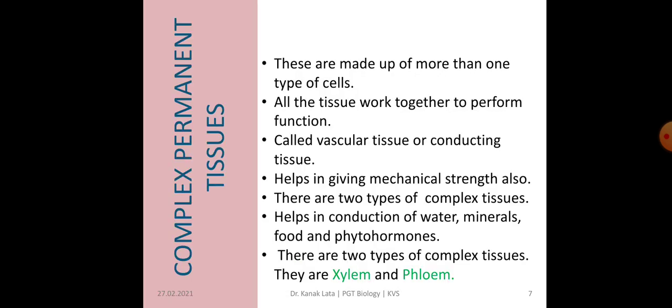The next topic is about complex permanent tissue. It is called complex because it is made up of more than one type of cells, and all the tissues work together to perform a function. This complex permanent tissue is also called vascular tissue or conducting tissue. It helps in giving mechanical strength besides conduction, and also provides mechanical support to the plant. There are two types of complex tissue, and they help in conduction of water, minerals, food, and phytohormones — that is, plant hormones. The two types of complex tissues are xylem and phloem.